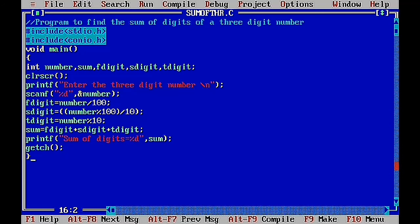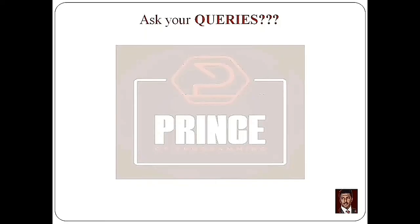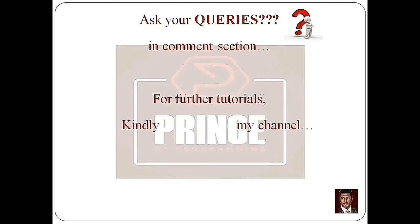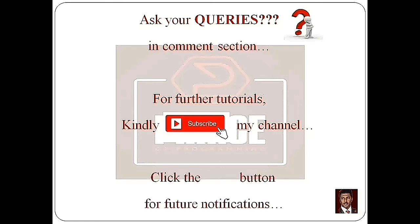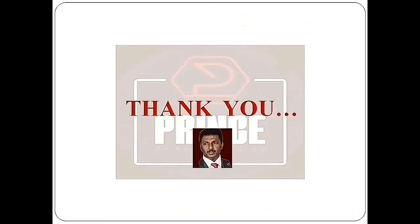So that's all about the C program to find the sum of digits of a three-digit number. If you have any doubts in this tutorial, please comment your queries in the comment section. If you want further tutorials, subscribe to my channel — I'm Prince of Programming. Click the bell button for notifications. Thank you guys, we will see you in the next tutorial.